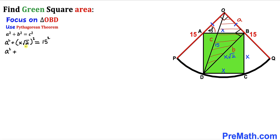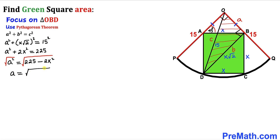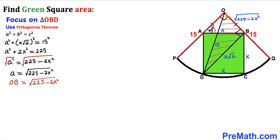Simplifying: a² + 2X² = 225, so a² = 225 − 2X², and therefore a = √(225 − 2X²). This means OB = √(225 − 2X²). Since OA equals OB, we also have OA = √(225 − 2X²).